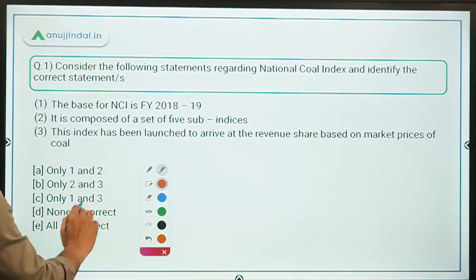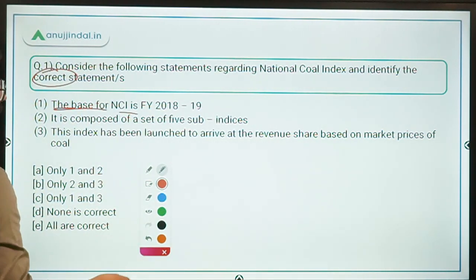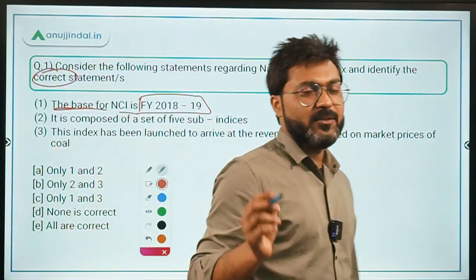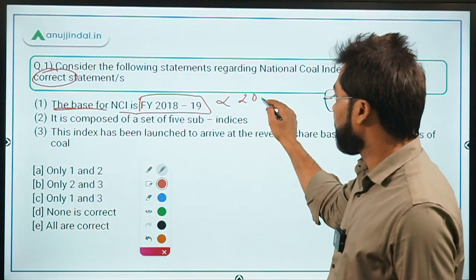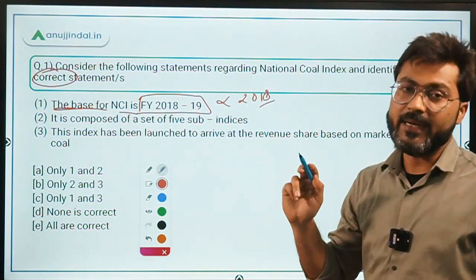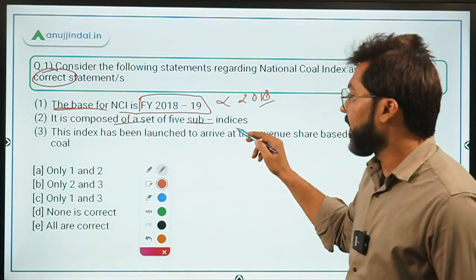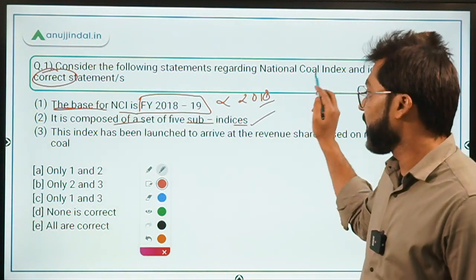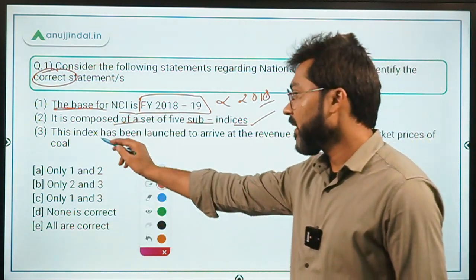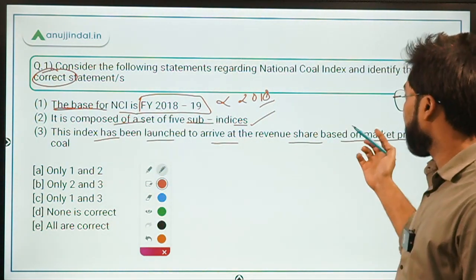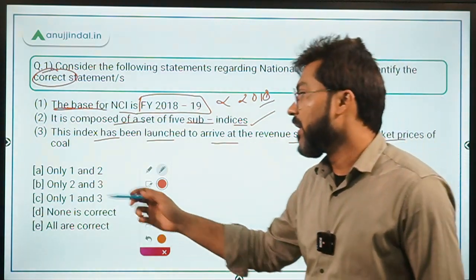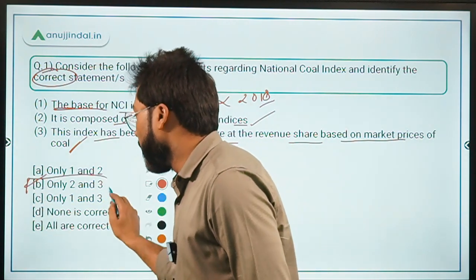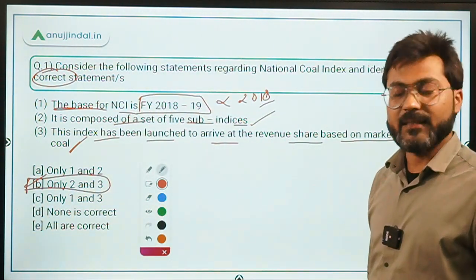Now let's identify the correct statements. Statement one says the base year for NCI is financial year 2019 — that is incorrect; it is financial year 2018. Statement two says it is composed of five sub-indices, three for non-coking coal and two for coking coal — that is absolutely correct. Statement three says this index was launched to arrive at revenue share based on market prices of coal — that is also correct. So the answer is option B: only statements two and three are correct.